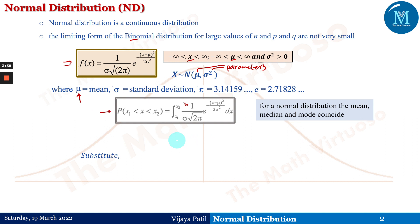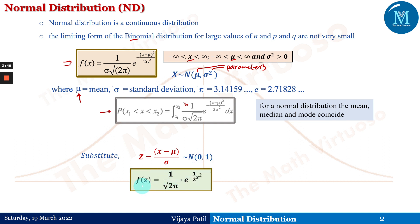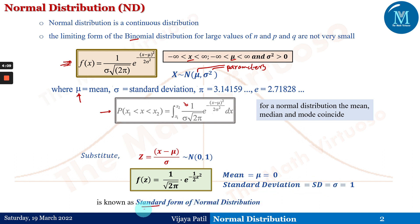If we substitute z = (x − μ) / σ, we obtain the standard normal distribution with μ = 0 and σ² = 1. The standard form is f(z) = (1 / √(2π)) × e^(−z²/2), where the mean equals 0 and the standard deviation equals 1. This standard form is used everywhere, including in the statistical tables provided to us.